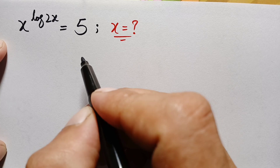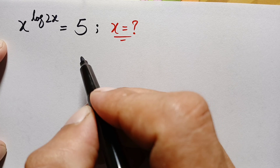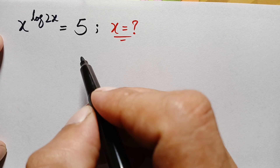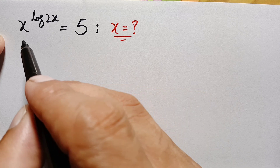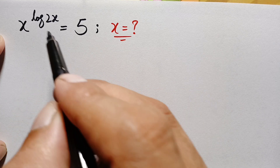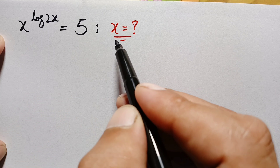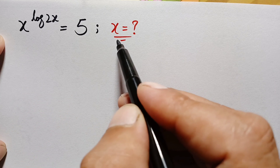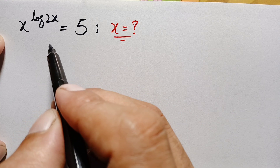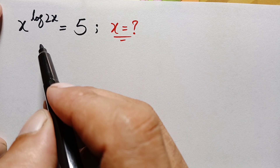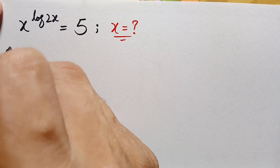Hello everyone, you are welcome. Today we have a new interesting exponential problem: x raised to the power log of 2x is equal to 5. Here we will try to find out all possible values of x. Let's start our solution.